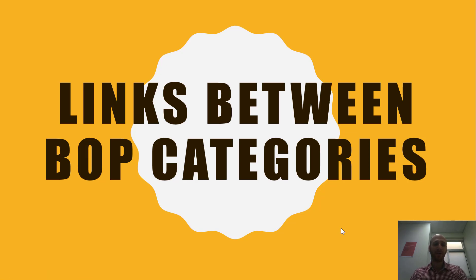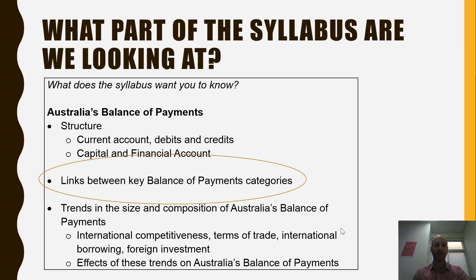Today we are looking at the links between balance of payments categories. If we look at the syllabus, we've moved on from the structure, and now we're looking at the second dot point: the links between key balance of payments categories.